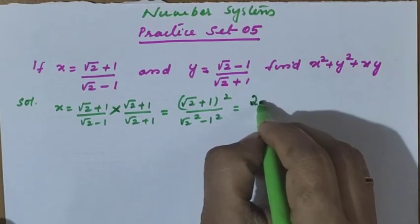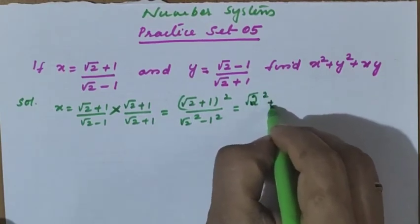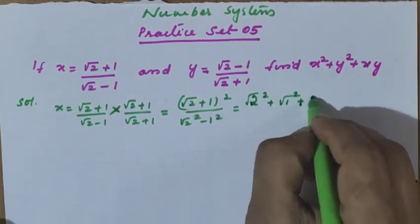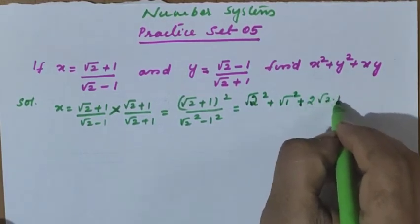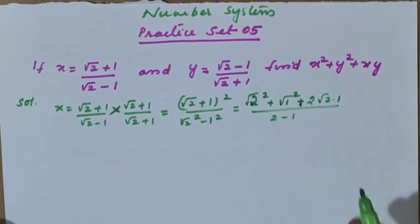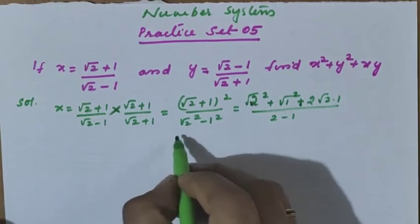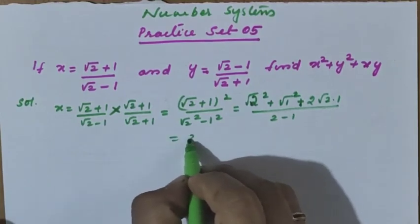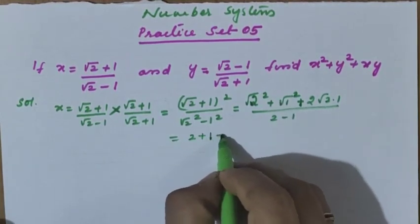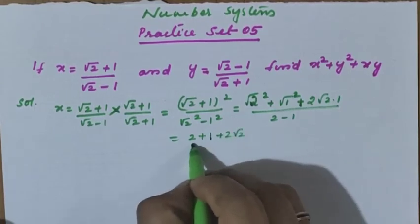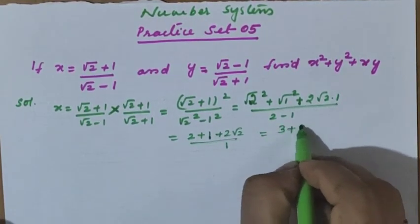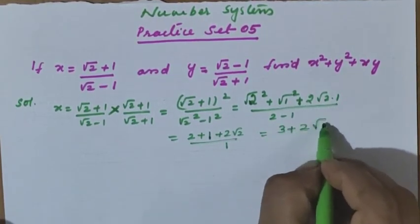Expanding: root 2 squared plus 1 squared plus 2 into root 2 into 1, divided by 2 minus 1. Root 2 squared is 2, 1 squared is 1, plus 2 root 2, divided by 1 only. That means x equals 3 plus 2 root 2.